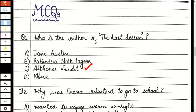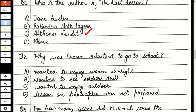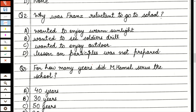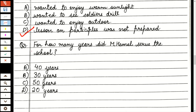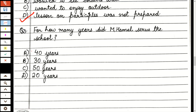Second MCQ: Why was Franz reluctant to go to school? Reluctant means not willing. He was reluctant because he had not prepared participles. Yes, the sunshine looked good, the soldiers looked enjoyable, but this is not the actual reason. The main reason was that he didn't have his participles prepared, so he didn't want to go to school, and he was afraid that Mr. Hamill would be daunting.